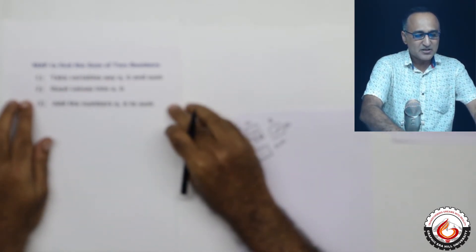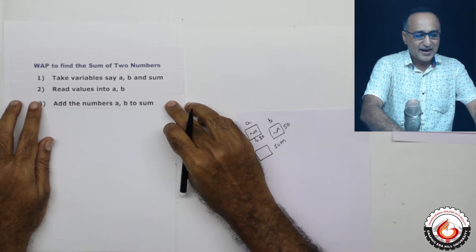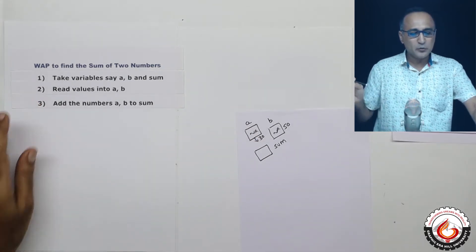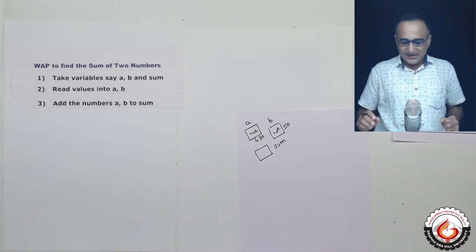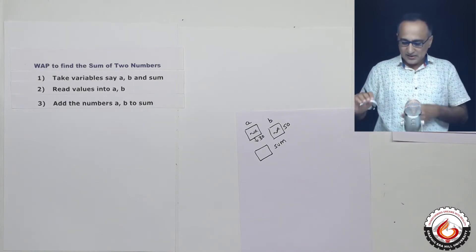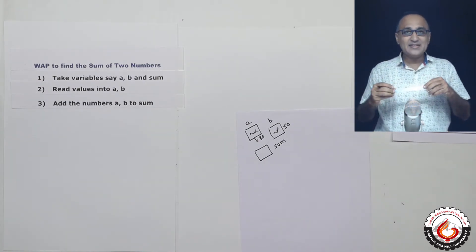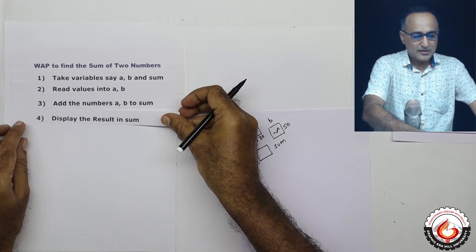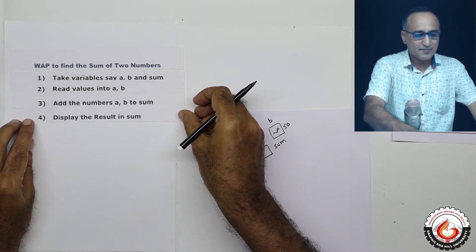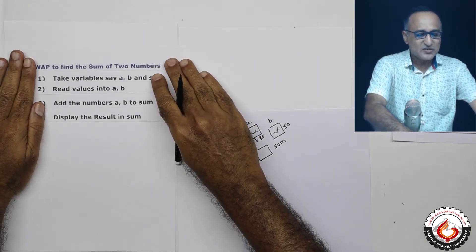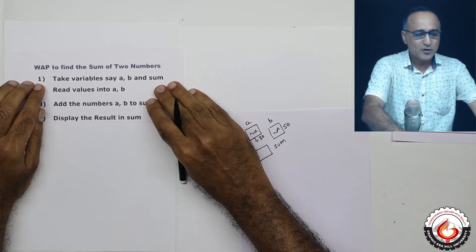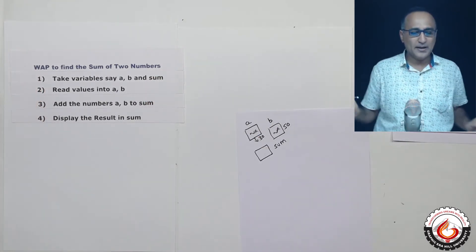So this is how the next step is going to look. I am going to say add the numbers a, b to sum, and the last step is simply going to be display the result in sum. Okay, the last step is going to be display the result in sum. So this is the pseudocode logic to find out the sum of two numbers.